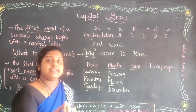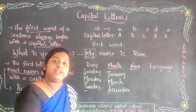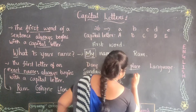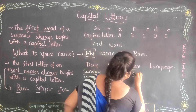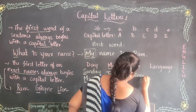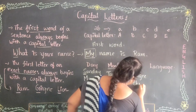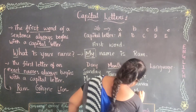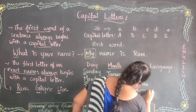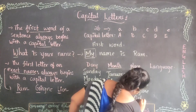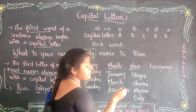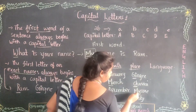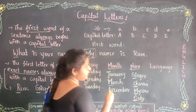We also use capital letters for names of places. New Delhi, Chennai, Hyderabad, Machilipatnam, Mysore — these are all place names. All these places must begin with a capital letter.